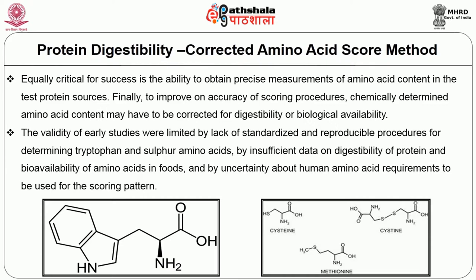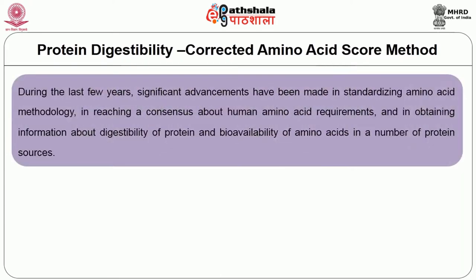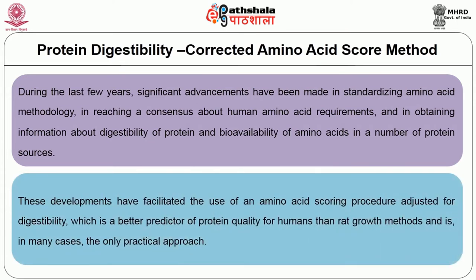During the last few years, significant advancements have been made in standardizing amino acid methodology, reaching consensus about human amino acid requirements, and obtaining information about the digestibility of protein and bioavailability of amino acids in a number of protein sources. These developments have facilitated the use of an amino acid scoring procedure adjusted for digestibility, which is a better predictor of protein quality for human populations than rat growth methods, and is in many cases the only practical approach.